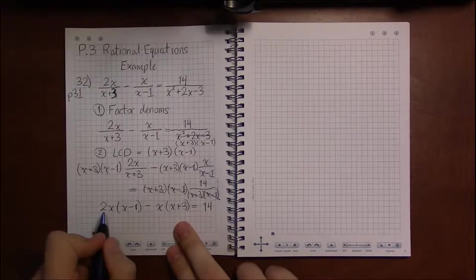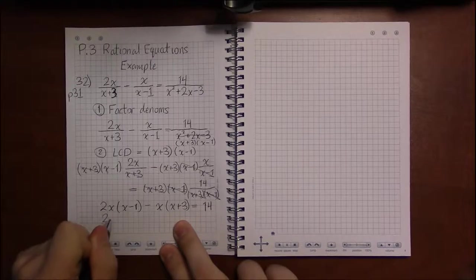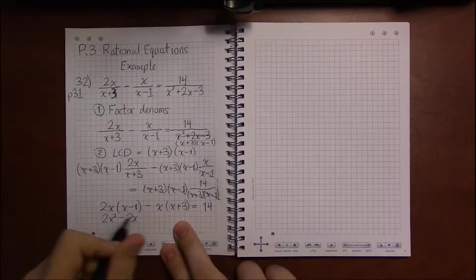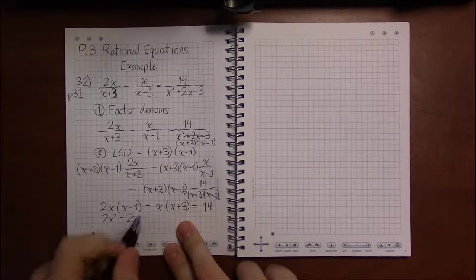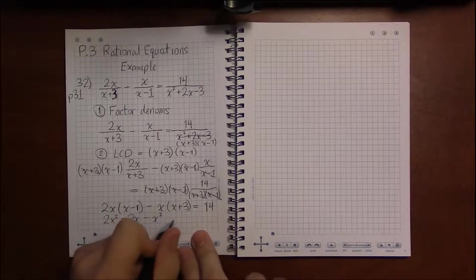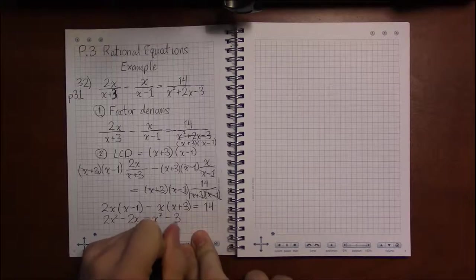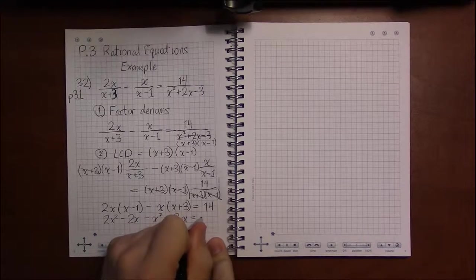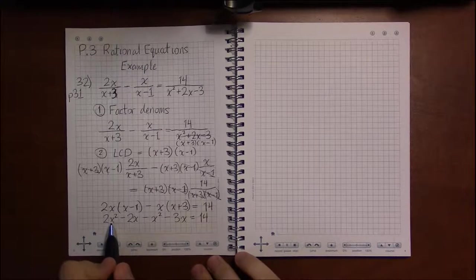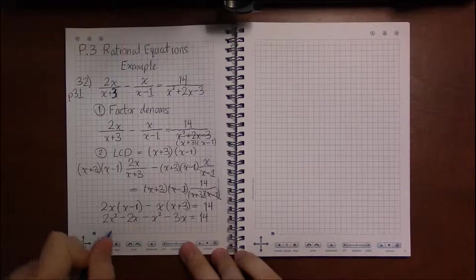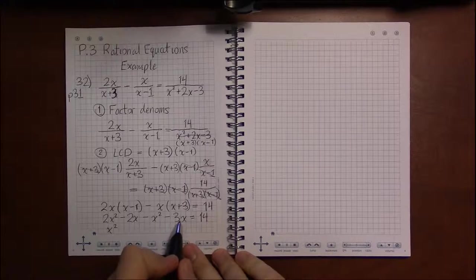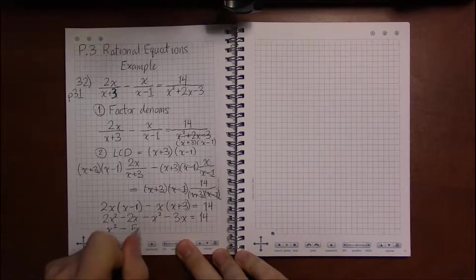All right. Distributing. Let's see. 2x times x is 2x squared. 2x times minus 1 is minus 2x. Minus x times x is minus x squared. Minus x times plus 3 is a minus 3x. And this is equal to 14.